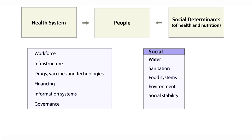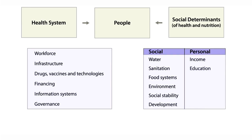The level of development and distribution of incomes within society matters. At the personal level, income, education, occupation, social status, gender, and participation in social networks — all of these are important social determinants of health.